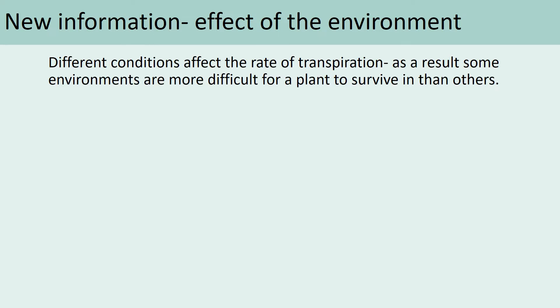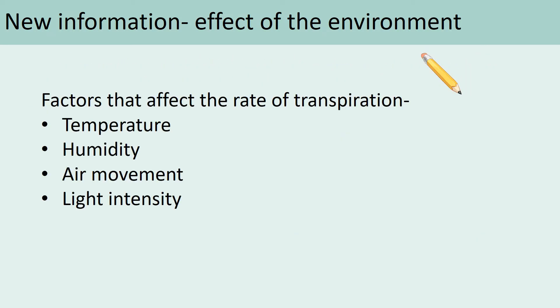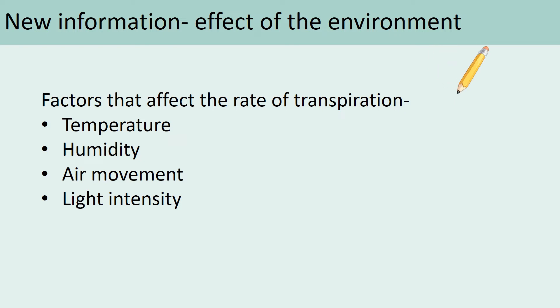Different conditions will affect the rate of transpiration — so we're talking about how quickly that water is moving through the roots, through the xylem in the stem, to the leaves, and evaporating out. Some environments are much more tricky for plants to survive in than others. You can see we've got a picture of a desert and a rainforest — very different conditions. There are a lot more plants in the rainforest because the conditions are really good. The four main factors that affect the rate of transpiration are: temperature, humidity (the moisture in the air), air movement (wind), and light intensity.